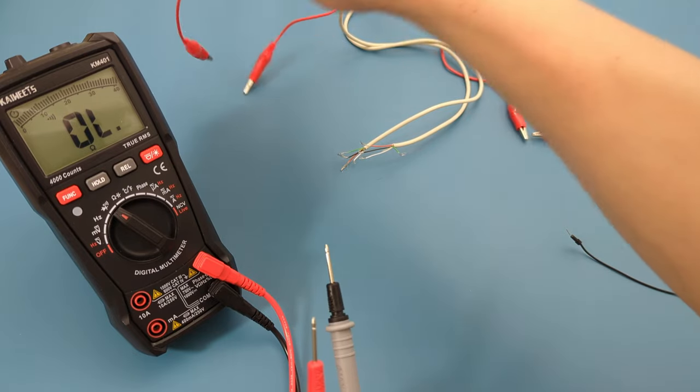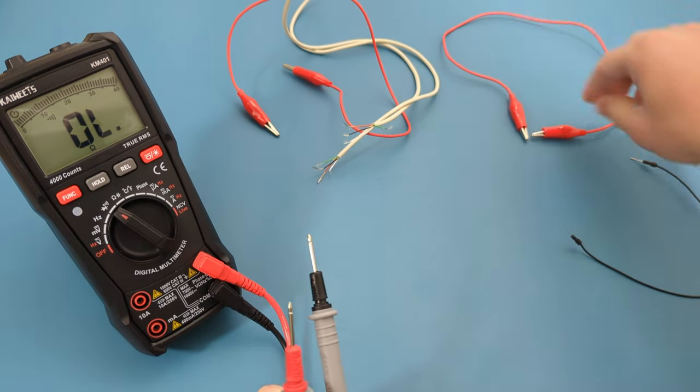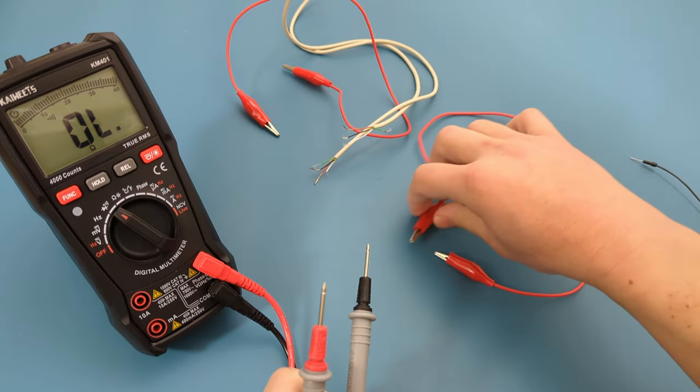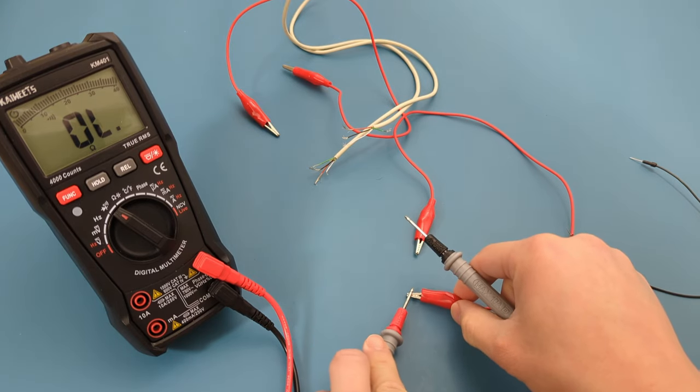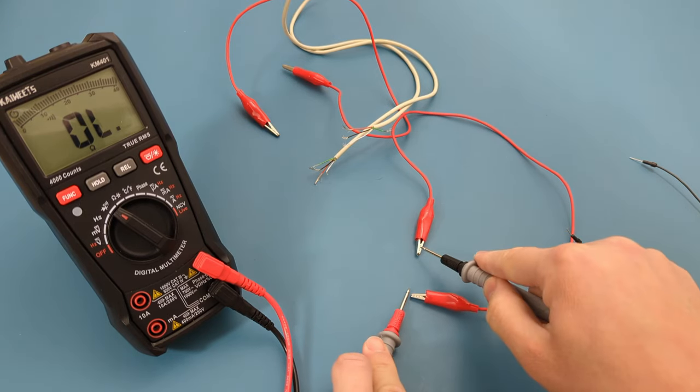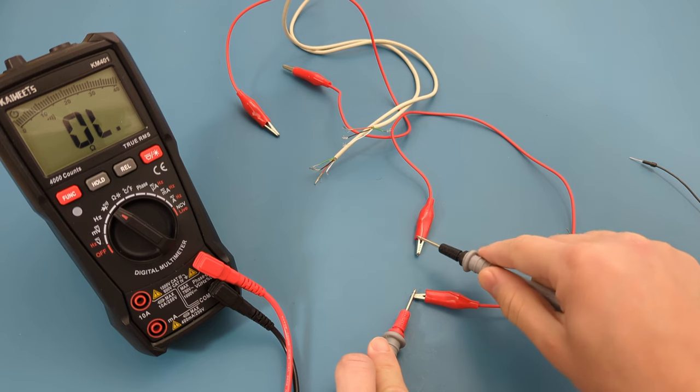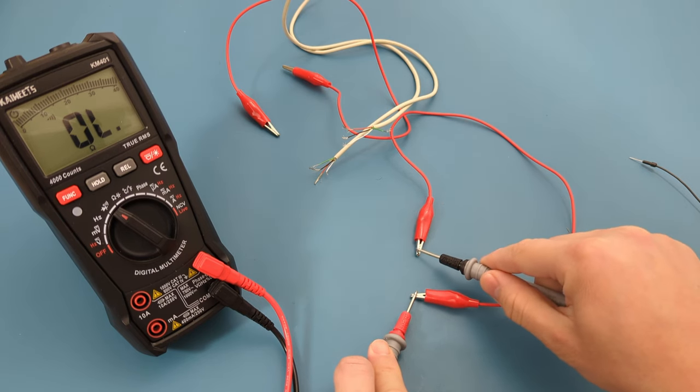The light turns green on the multimeter. This alligator clip is good. When we check this other alligator clip, there is no beep. This indicates the wire is broken and should be replaced.